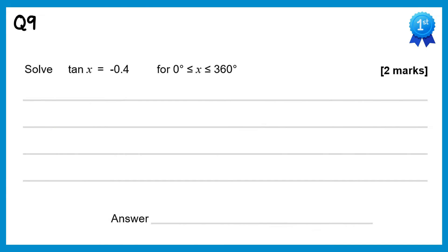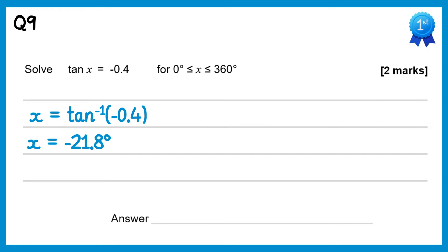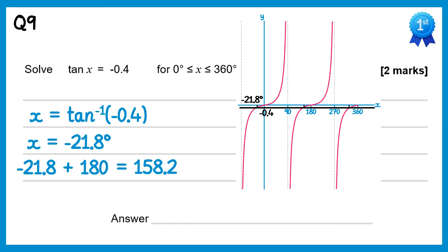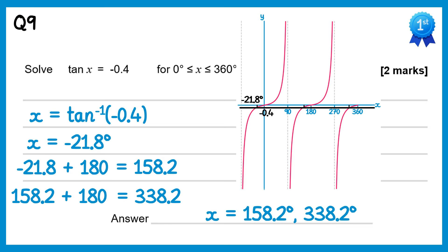For this question we start with inverse tan of negative 0.4, which gives negative 21.8 — not between 0 and 360. Looking at the graph and drawing a horizontal line at negative 0.4, we found the solution at negative 21.8 on the left. To find the other two solutions we keep adding 180: negative 21.8 plus 180 is 158.2, and adding 180 again gives 338.2. So the solutions are 158.2 and 338.2.